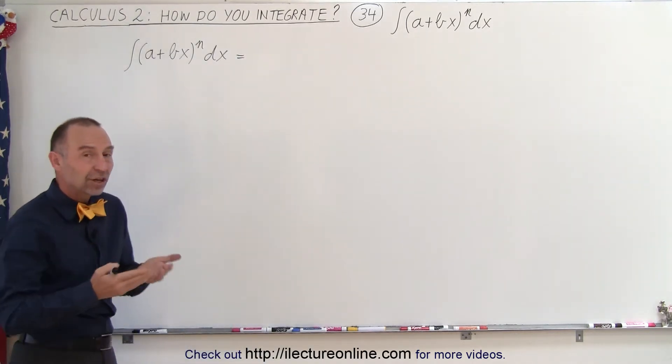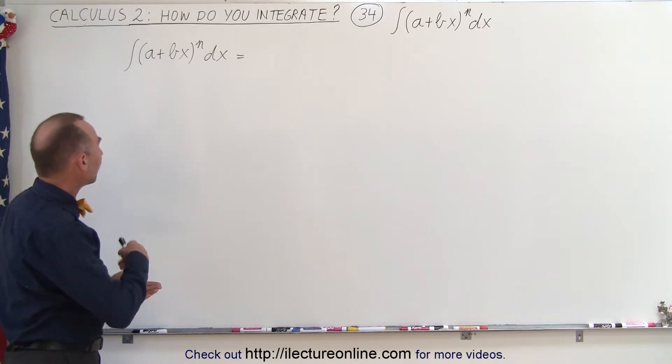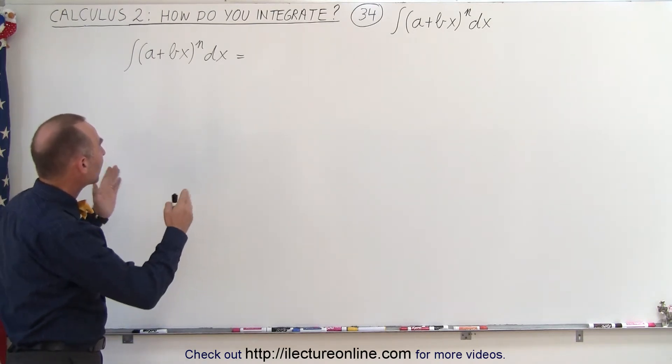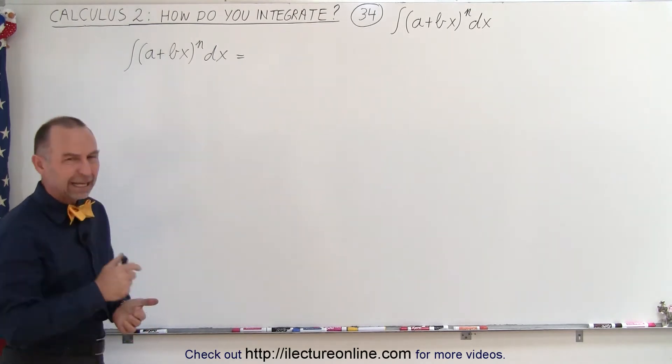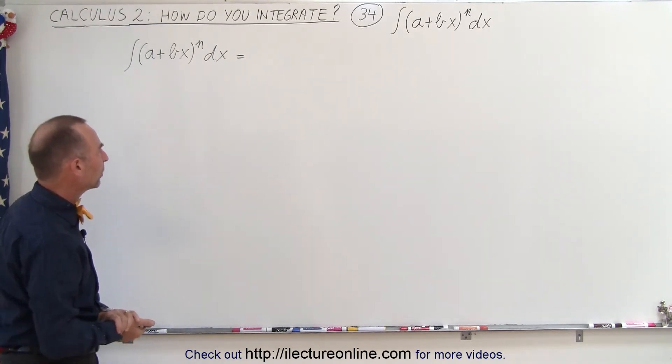Now here we have a kind of a general integral: the integral of (a + bx)^n dx, where n can be any number, except negative 1, because then the approach will be a little bit different.